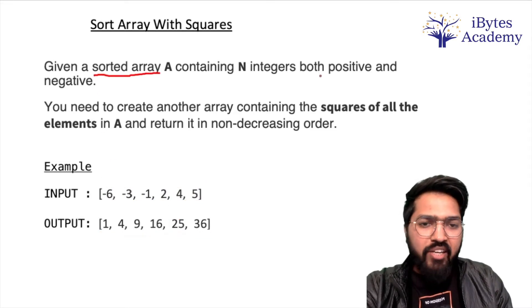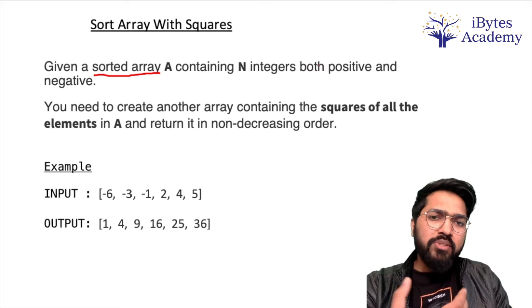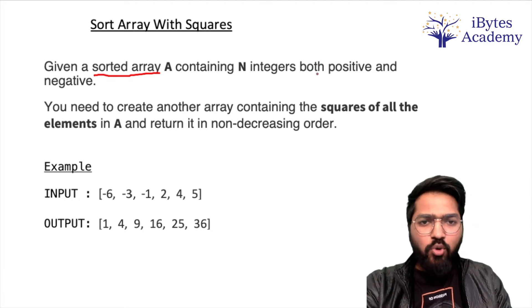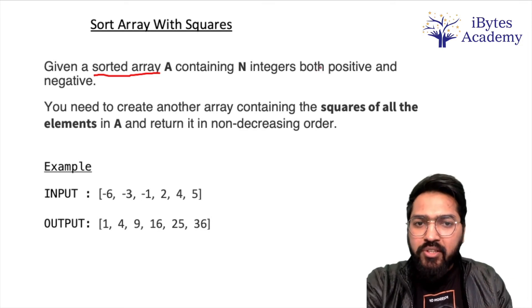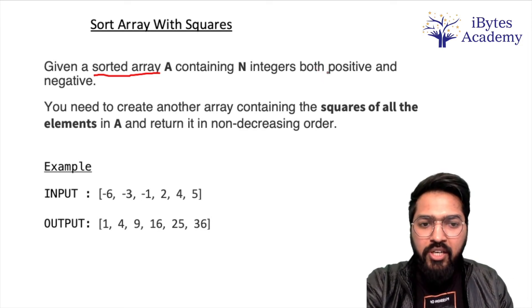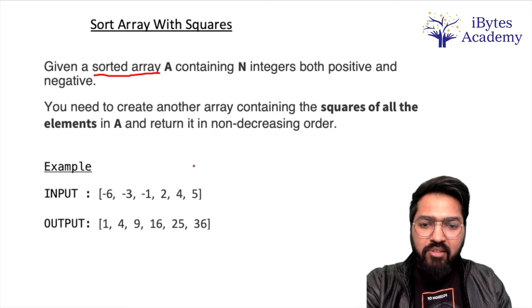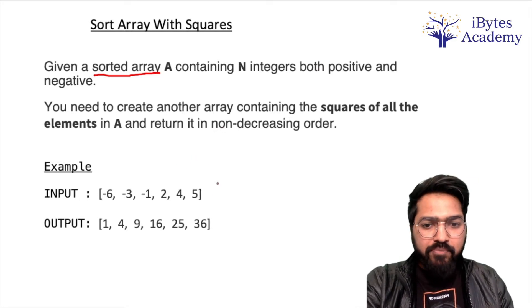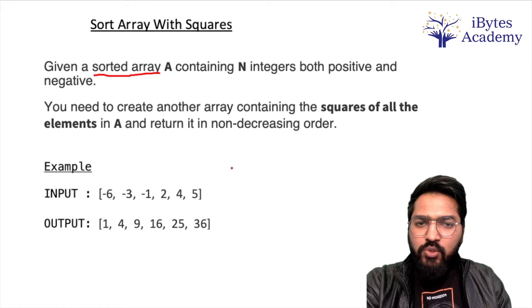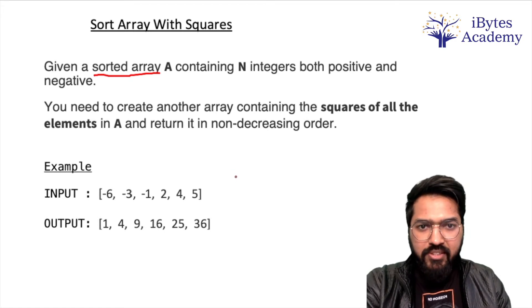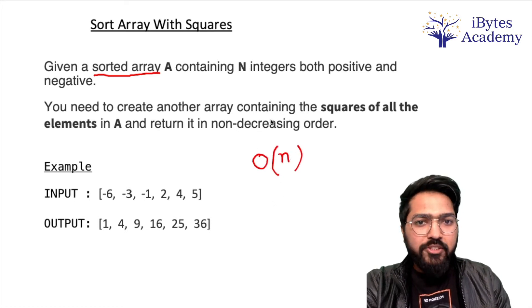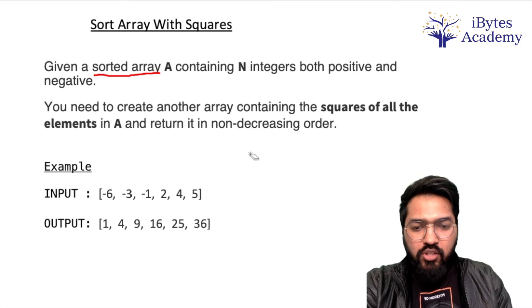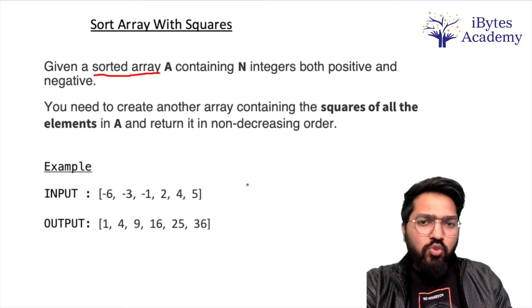One very important point is ki array hummara sorted hai aur us mein negative aur positive numbers dono hai. Agar sirf positive numbers hote to obviously bohot hi simple kaam tha, phir to humko jo hummara given array hai uske sare numbers ko square karte ja hai and we already sorted order mein honge hi. But kyunki hummara pas negative numbers hai to humko thoda sa zyada kaam karna padega. So I hope problem is clear. Ek bar video ko pause karke khud se souch lo and phir uske baad humm log solution discuss karte hai. Expected time complexity is O(n) to O(n) mein hummari problem solve ho jani chahiye hai.